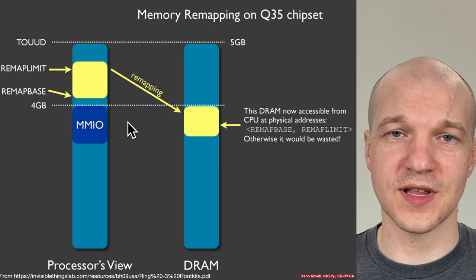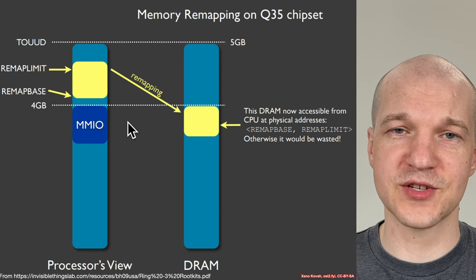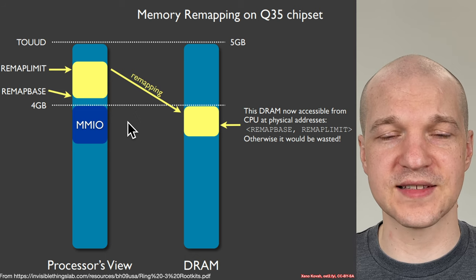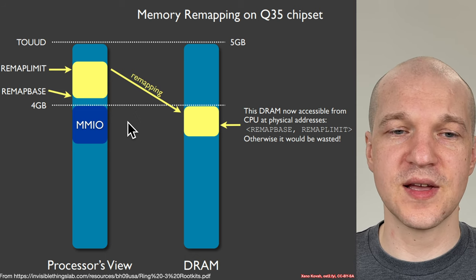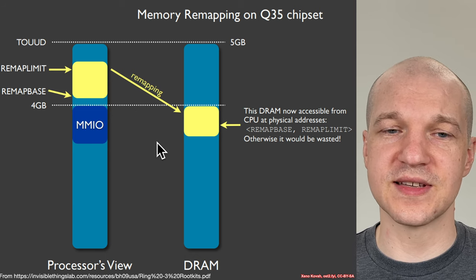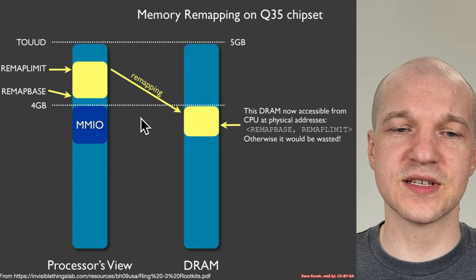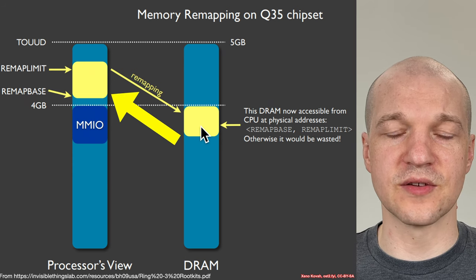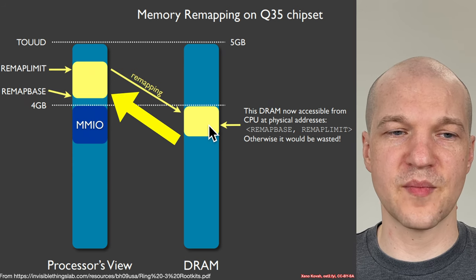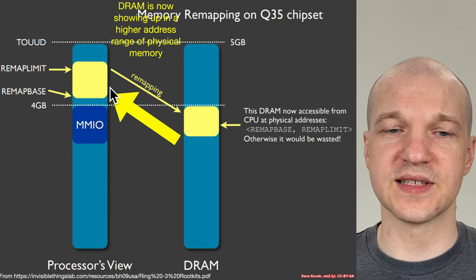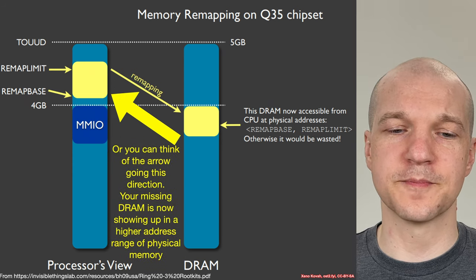You take this chunk of RAM and map it where these memory registers specify. Invisible Things Lab used this to overlap with system management mode in order to break past some access controls. But in the intended usage, you're taking this chunk of physical RAM and mapping it somewhere else so that an operating system can use it.